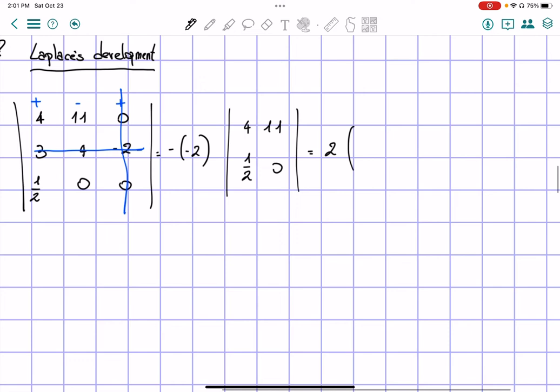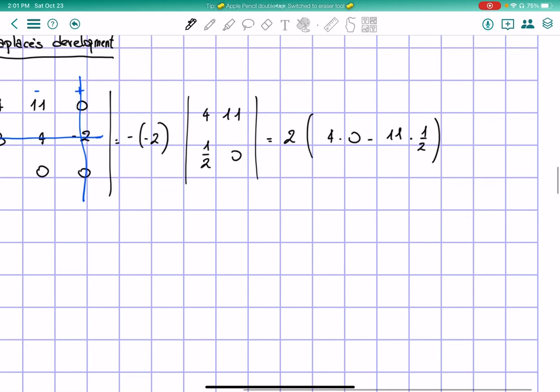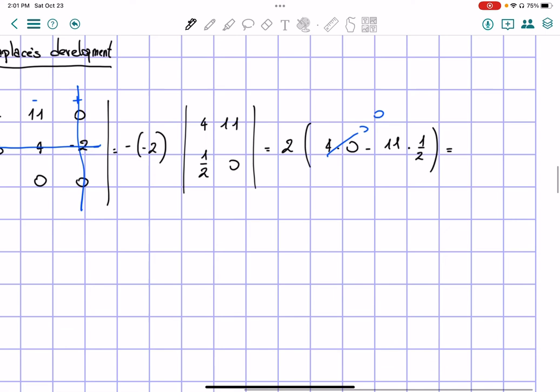Let's solve it. We have 2 times 4 times 0 minus 11 times 1 half. So this one, the 4 times 0 of course is equal to 0.